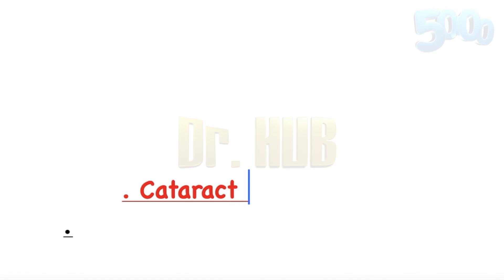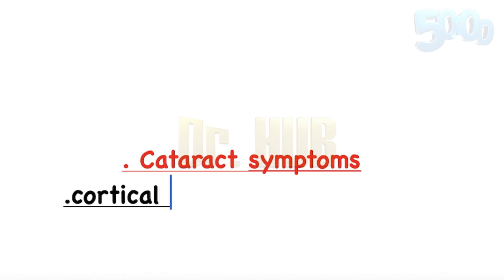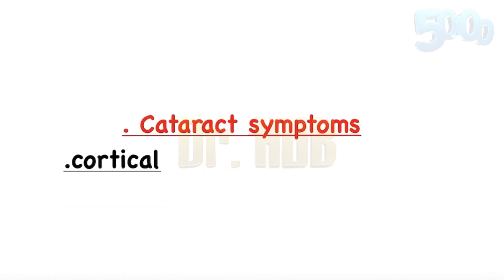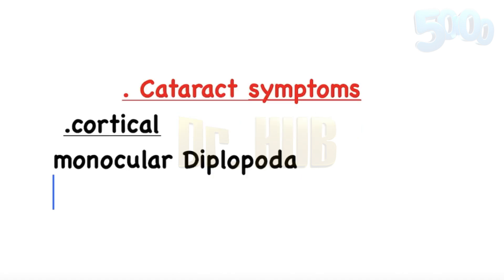Let's name the cataracts — it will be easier. First is the cortical cataract. In the incipient stage of cortical cataract, the commonly seen symptom is monocular diplopia.